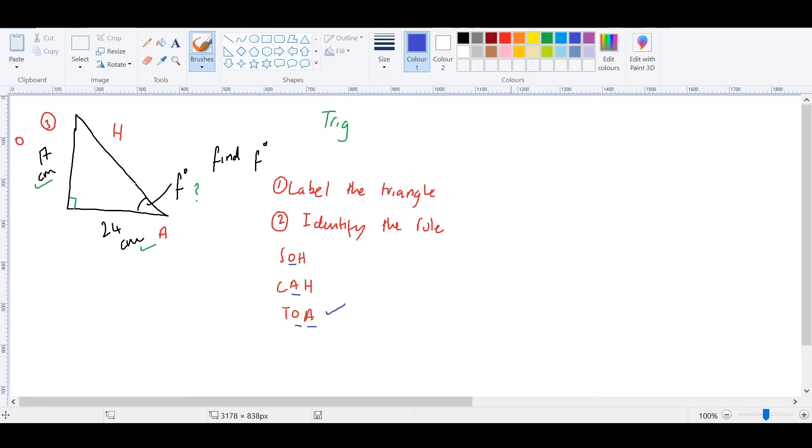So let's write out the rule, which brings us to the third step, to sub in the values. So TOA, it's going to be TAN equals O over A, and it's O over A because O comes first. So it's going to be TAN F equals O over A. And what's O? 17. And what is A? 24.